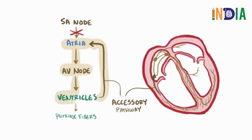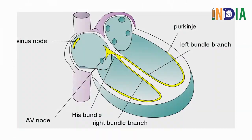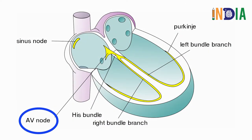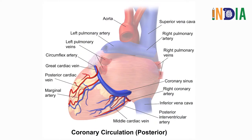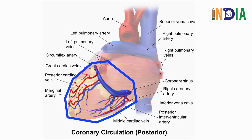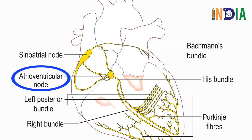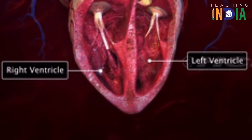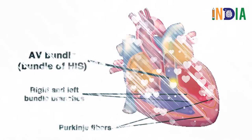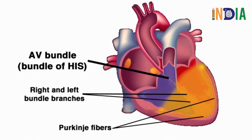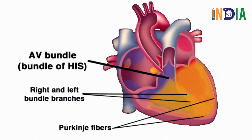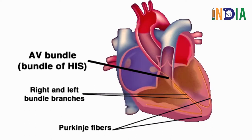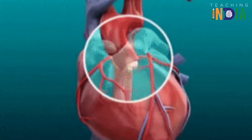After the Sinoatrial node sends its electrical stimulus, it travels through the inter-atrial septum to reach the Atrioventricular node. The Atrioventricular node is located in the inter-atrial septum, in the triangle of Koch near the coronary sinus. The Atrioventricular node slows the signal slightly, so that blood fully enters the ventricle before the ventricle contracts. The electrical signal then diverges from the Atrioventricular node through the left and right Bundle of His and Purkinje fibers.